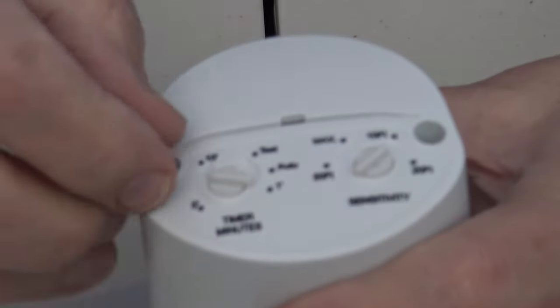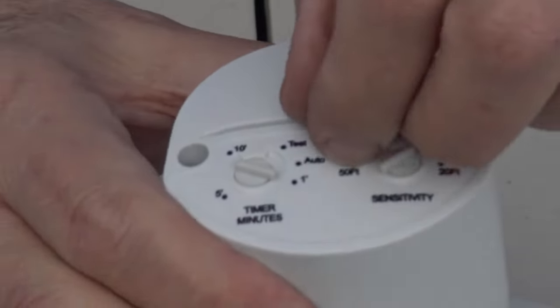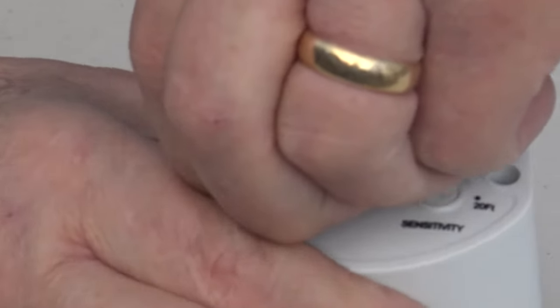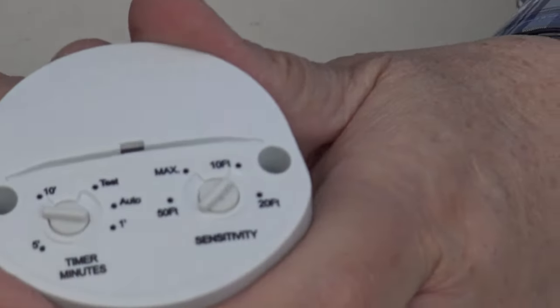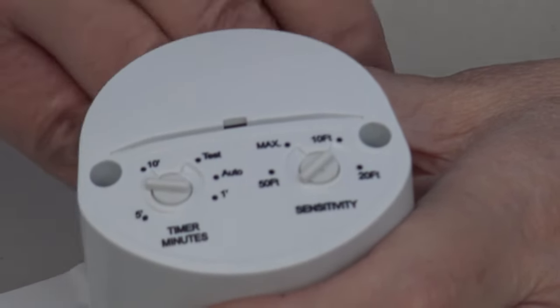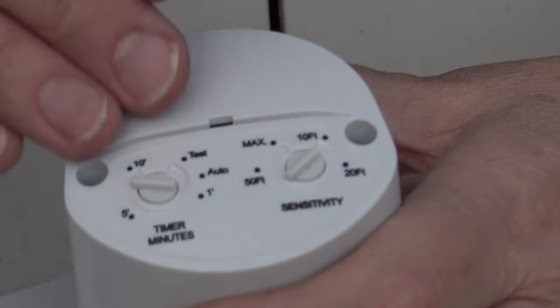You have to go past auto and then either go to a minute, go to five minutes, or go to 10 minutes. And what that does is it controls the amount of time that the lights stay on after it's detected motion.